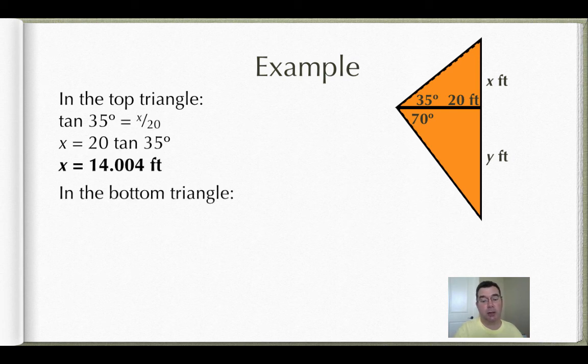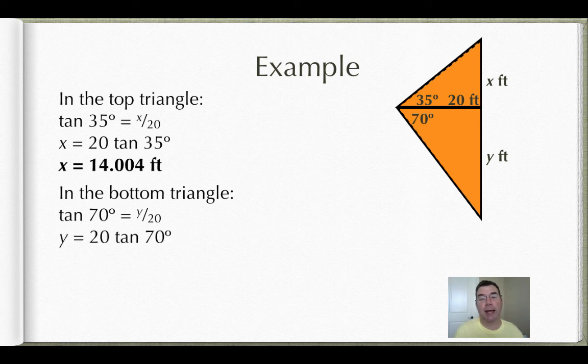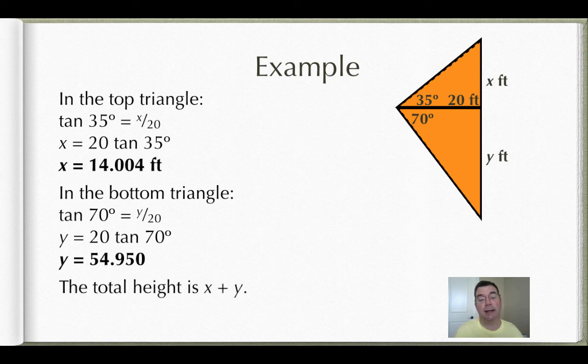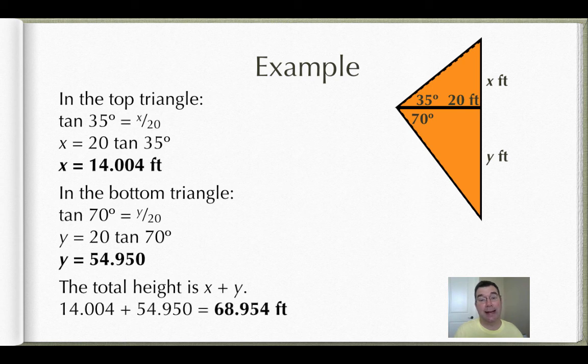Now turning my attention to the bottom triangle, the opposite is y, the adjacent is 20, so I'm using tangent again. This time it's the tangent of 70, which is the opposite y over the adjacent 20. Cross multiply, I get y is equal to 20 times the tangent of 70, so y is 54.950. So if I add x and y together, I should get the total height of the building, which is 68.954 feet.